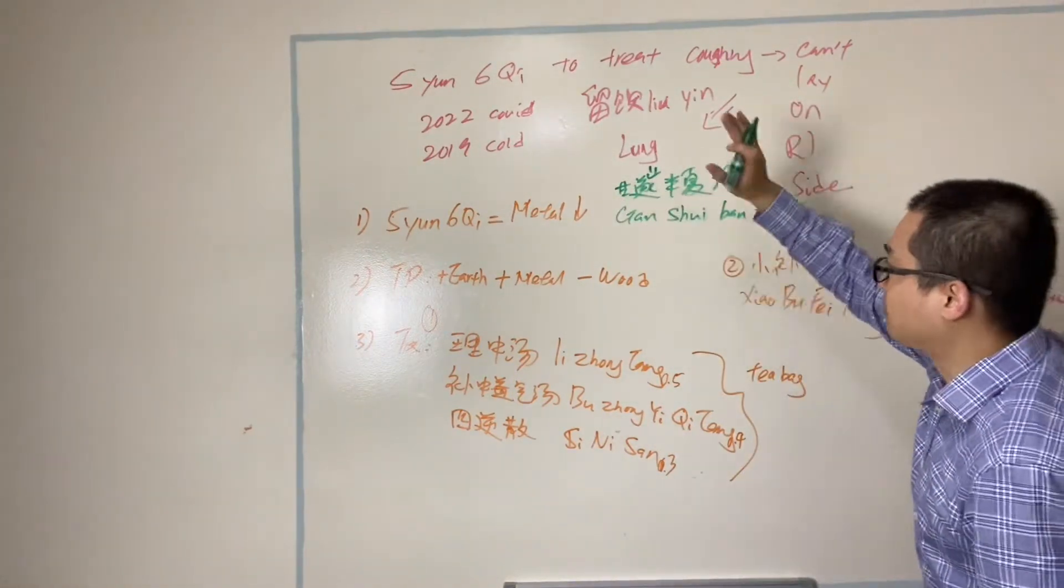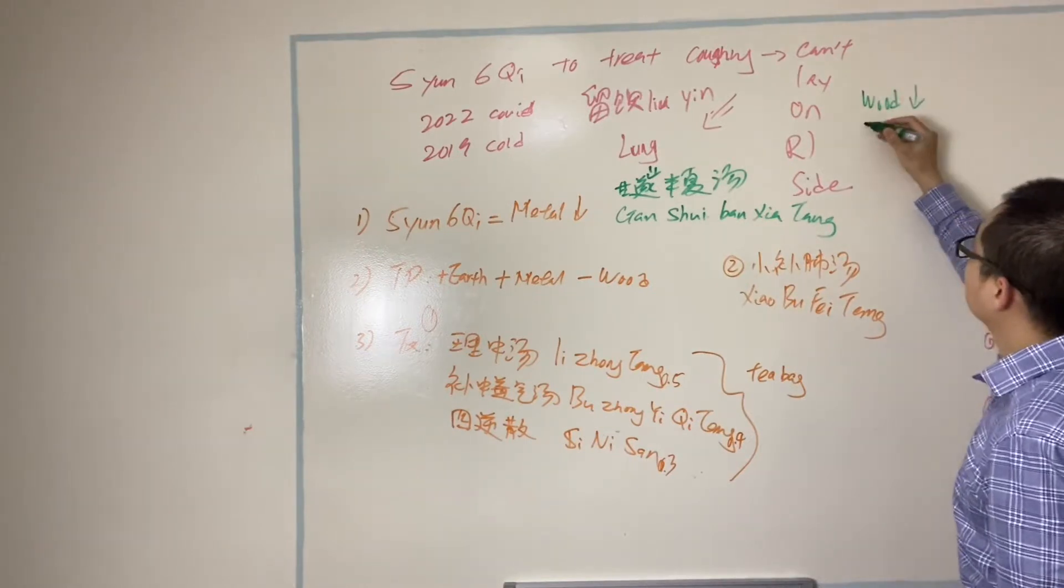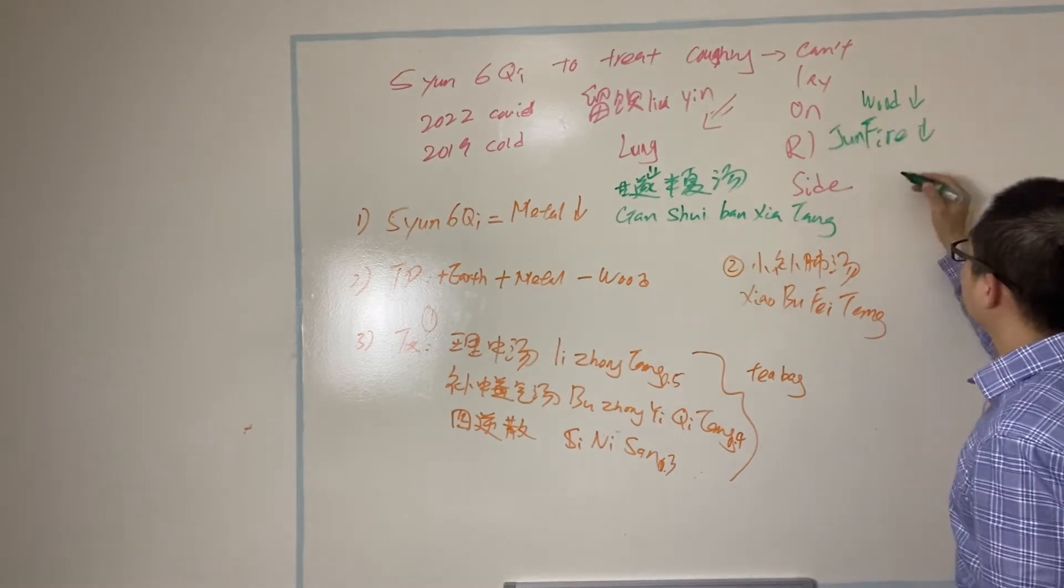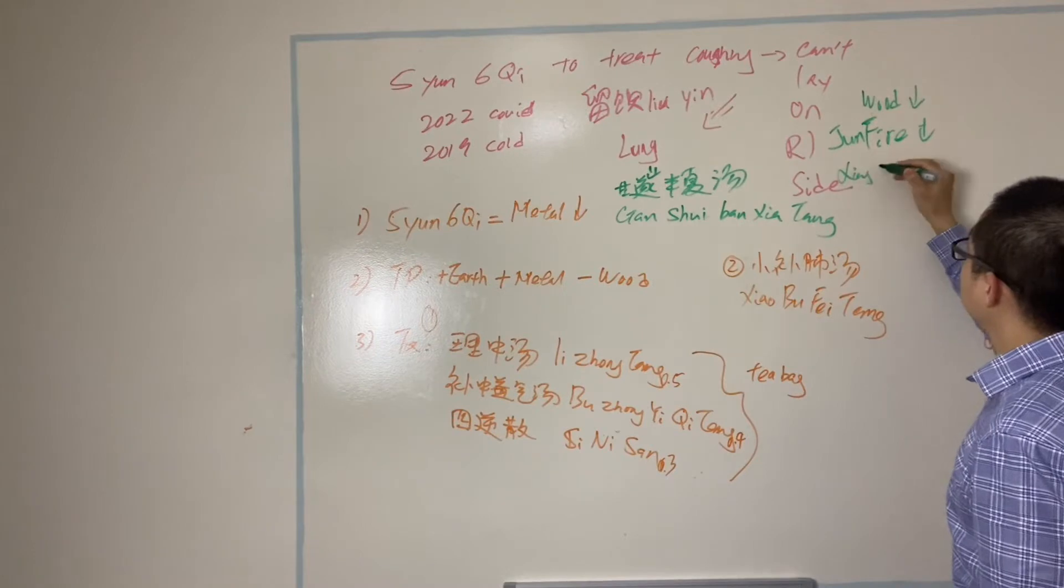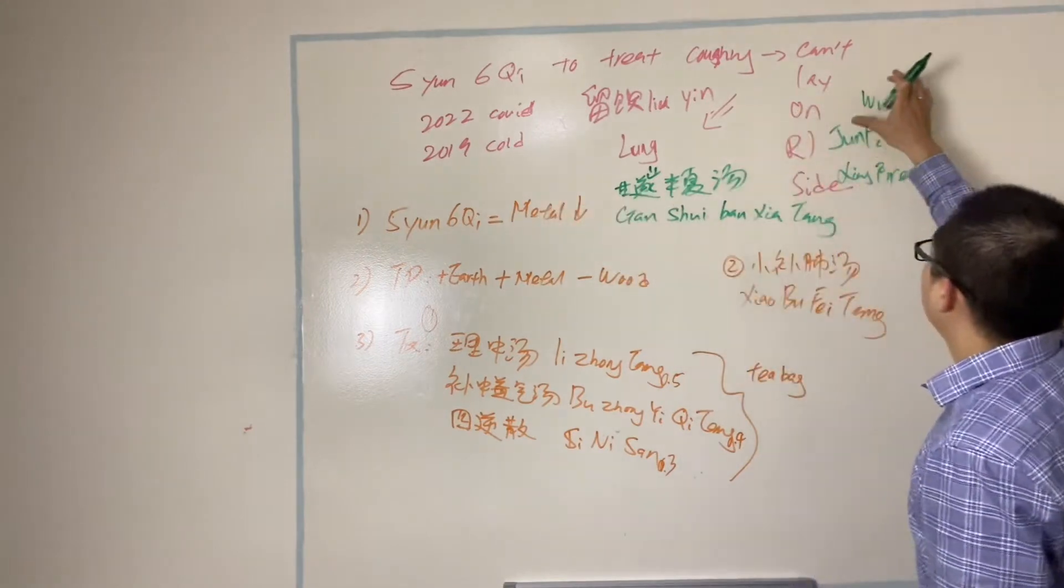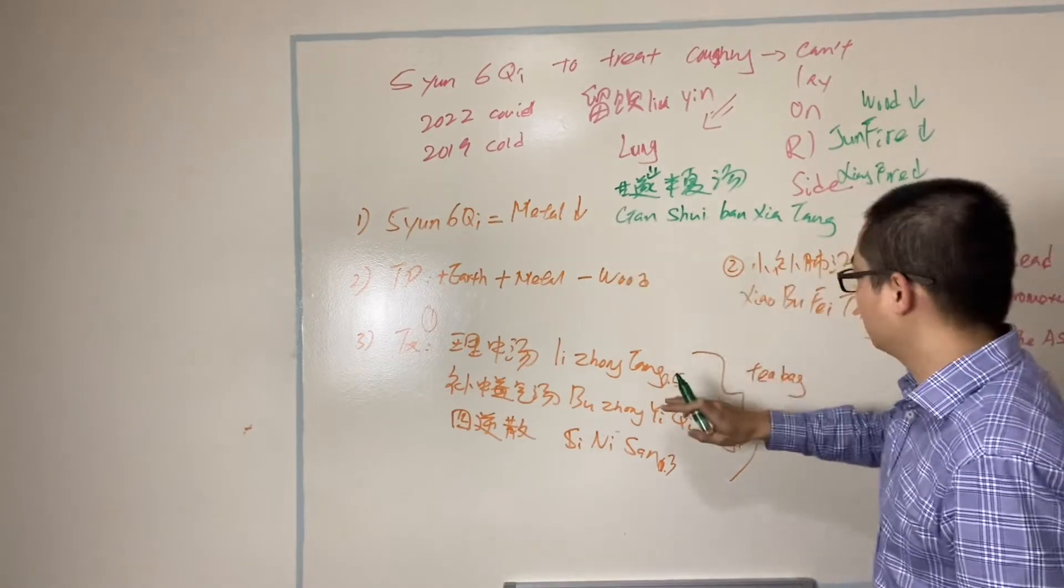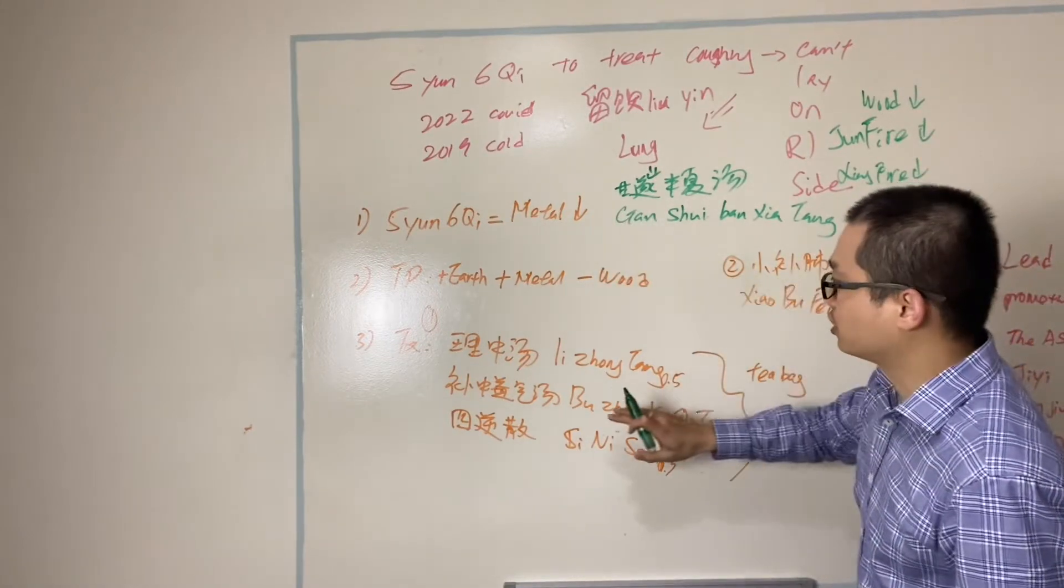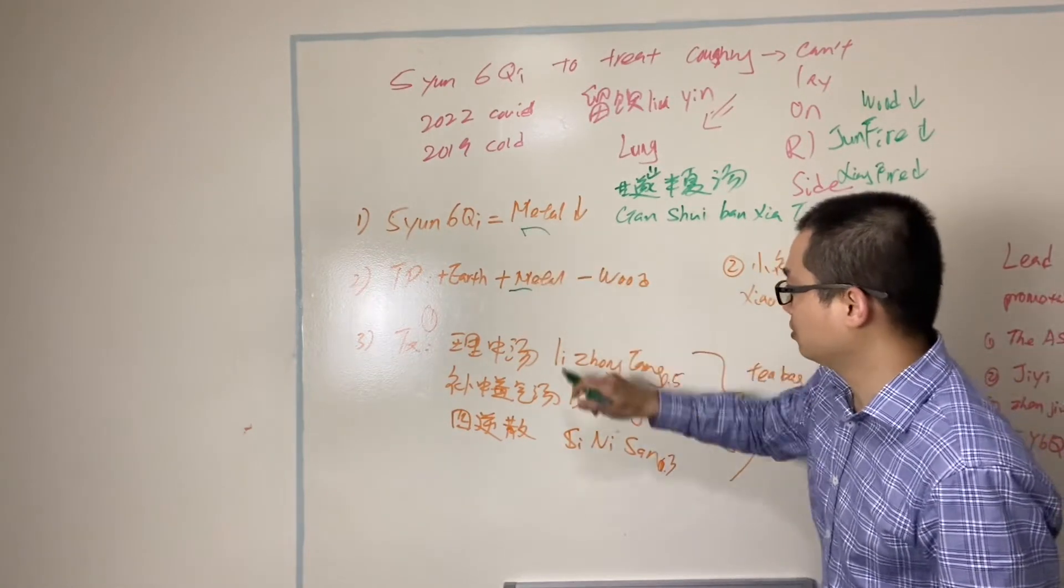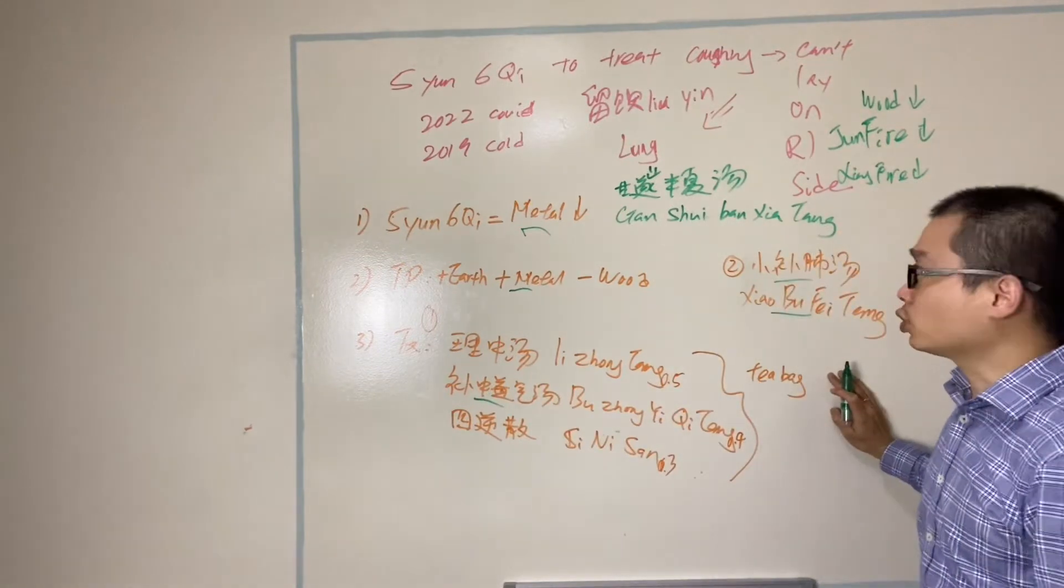Look at here. What if a patient comes and say wood weak, or fire, which is Jun fire weak, or Xiang fire weak. If my diagnosis over here, I diagnose as those, I'm going to treat those. I'm not going to treat lung. At the moment I treat lung. And here I treat, this formula is lung, this is lung, this is lung. This is all going for lung. You see, we mainly focus on the lung.